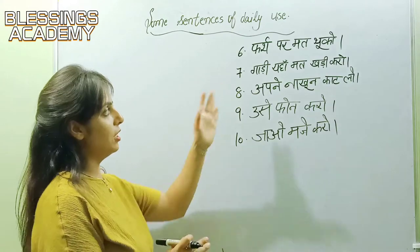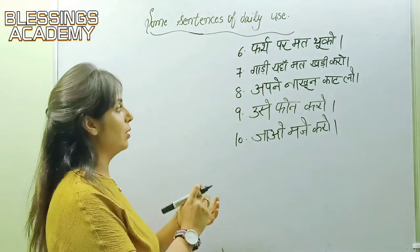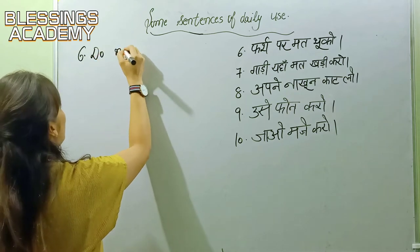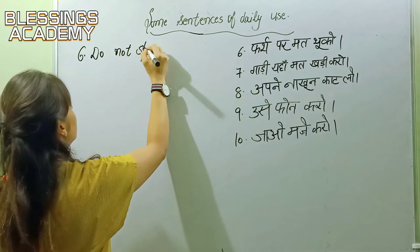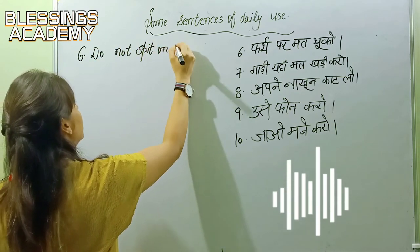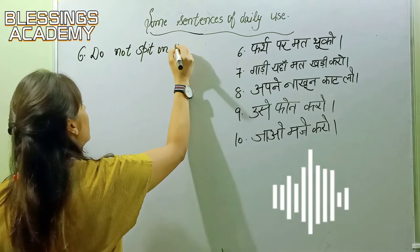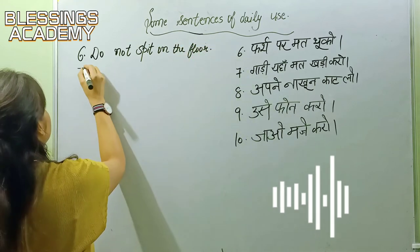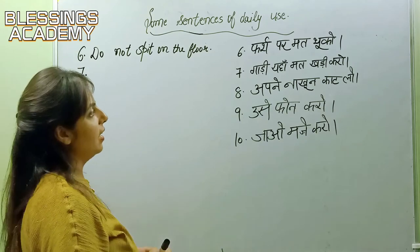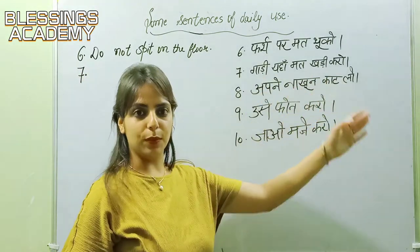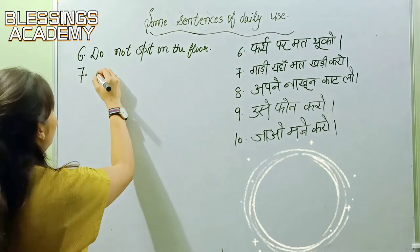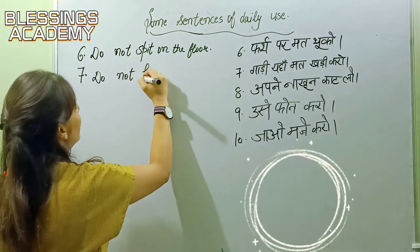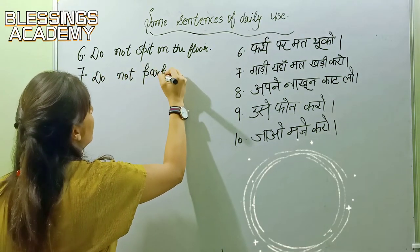The sixth sentence: 'Par mat thukou' — how do we write this? 'Do not spit on the floor.' The seventh one: 'Gaadi yaha mat khadi karo.' How can we translate it? 'Do not park here.'